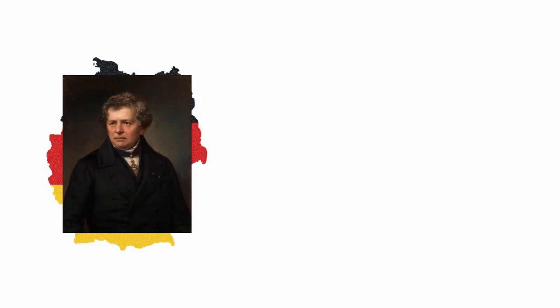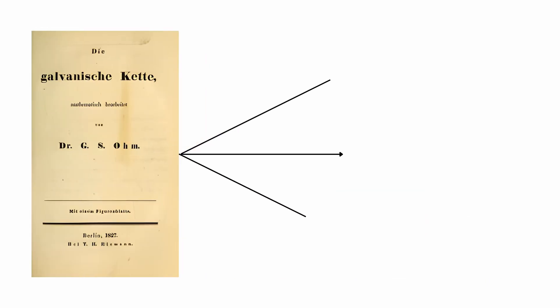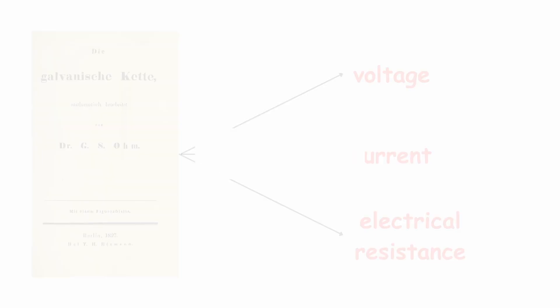Georg Ohm – Ohm's Law. In 1827, German physicist George Simon Ohm published Die Galvanische Kette, in which he formulated a quantitative relationship between voltage, current, and electrical resistance, known as Ohm's Law.